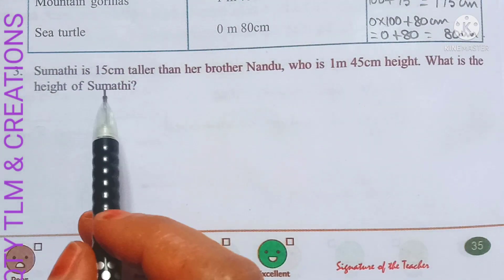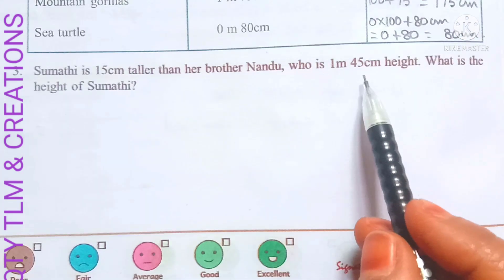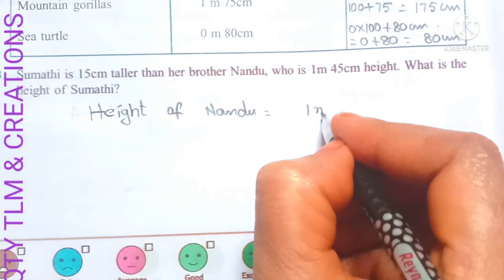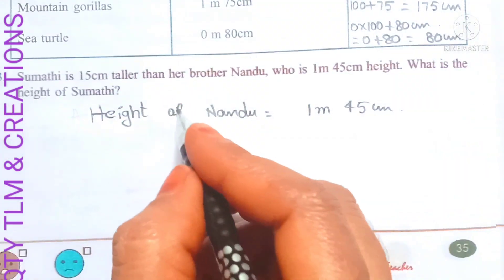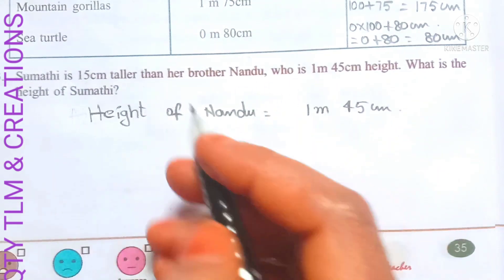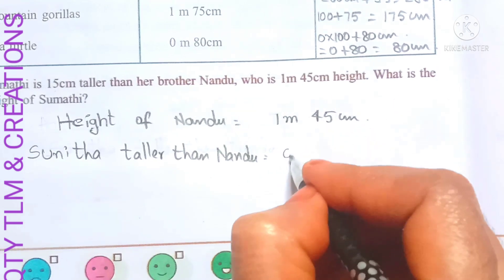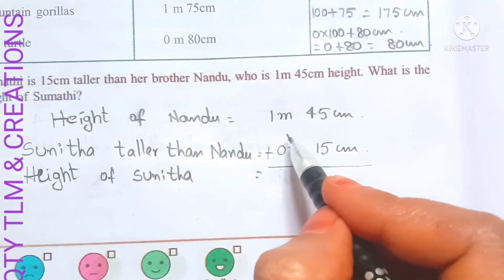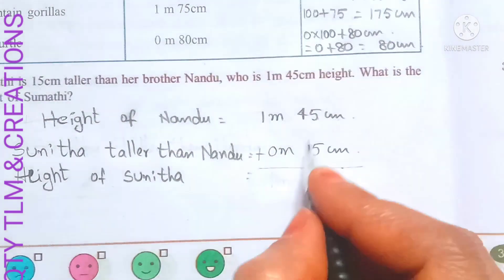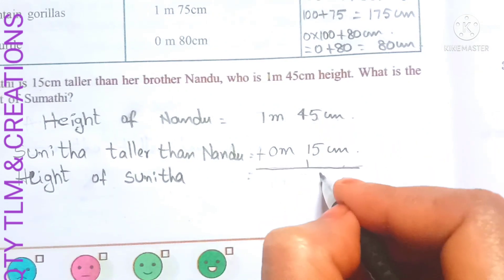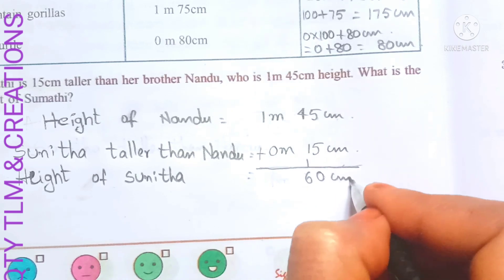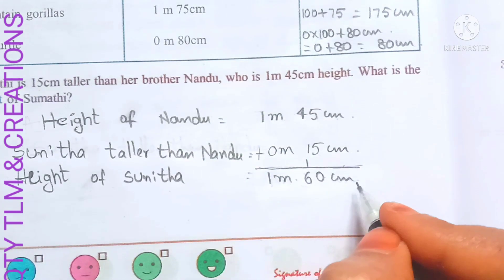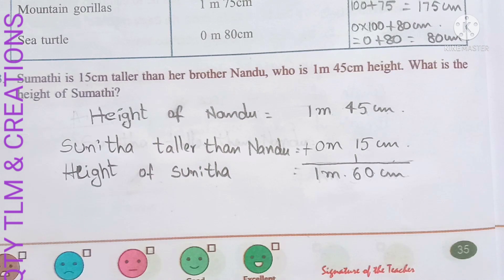Next question: Sumati is 15 centimeters taller than her brother Nandu, who is 1 meter 45 centimeters tall. What is the height of Sunita? Height of Nandu equals 1 meter 45 centimeters. Sunita is taller by 0 meters 15 centimeters. Adding: 5 plus 5 equals 10, carry 1; 45 plus 15 plus carry equals 60 centimeters; meters 1 plus 0 equals 1 meter. Height of Sunita is 1 meter 60 centimeters. We will discuss remaining worksheets in another video — until then, bye, thank you.